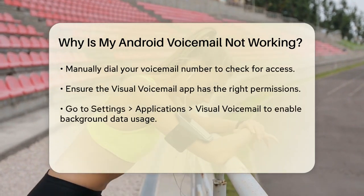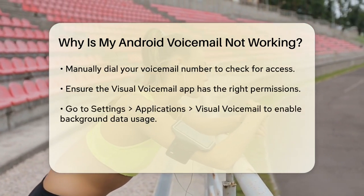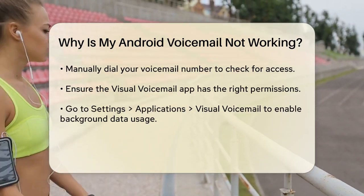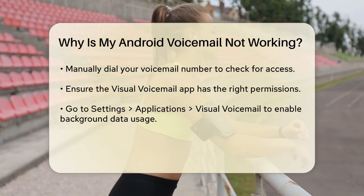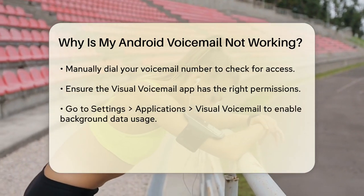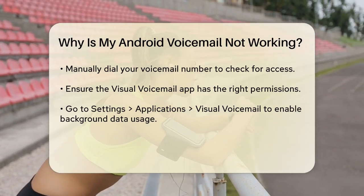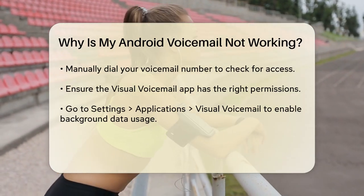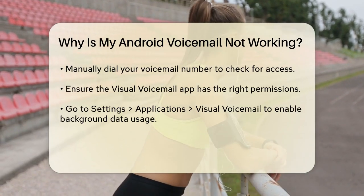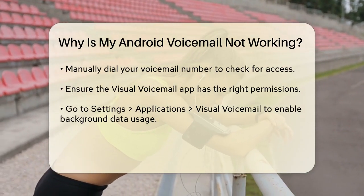Another common problem is with the visual voicemail app itself. Make sure the app has the necessary permissions to run in the background. To do this, go to your phone's Settings, then to Applications or App Manager, find the visual voicemail app, and enable Allow background data usage. If the app is already set up correctly, try turning visual voicemail off and then back on.